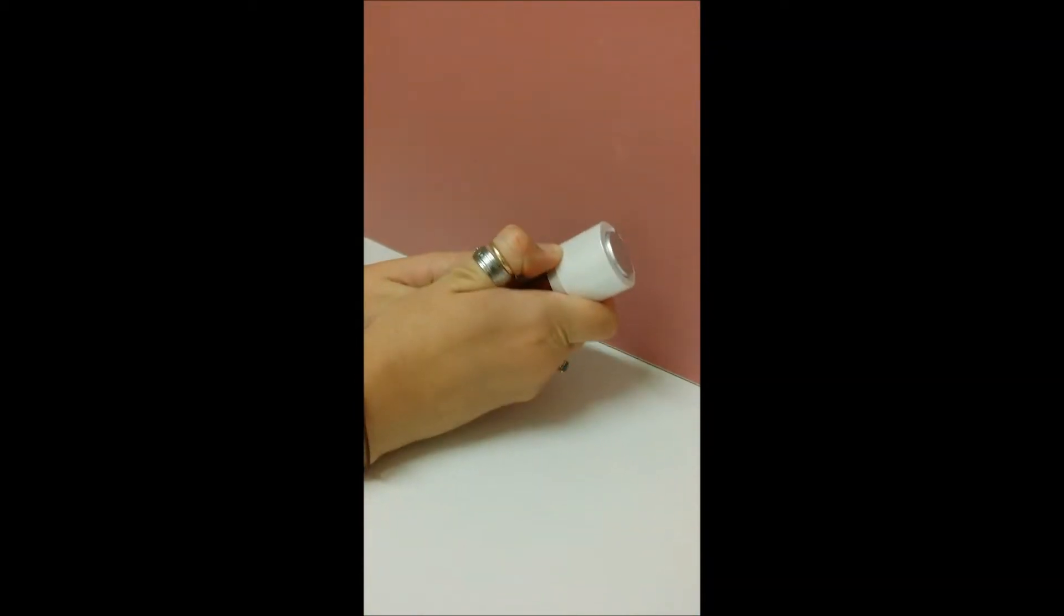Firmly grab the silver ring and remove it from the red container. Then remove the clear container from the inside.